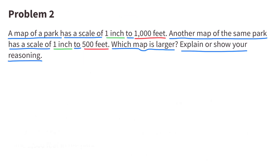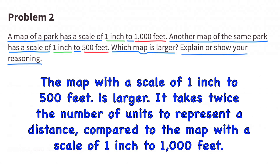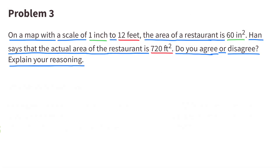Number two: a map of a park has a scale of one inch to 1,000 feet. Another map of the same park has a scale of one inch to 500 feet. Which map is larger? The map with the scale of one inch to 500 feet is larger — it takes twice the number of units to represent the distance compared to the map with a scale of one inch to 1,000 feet.